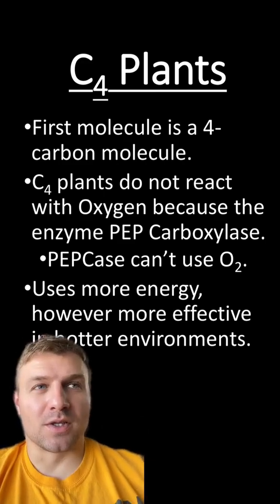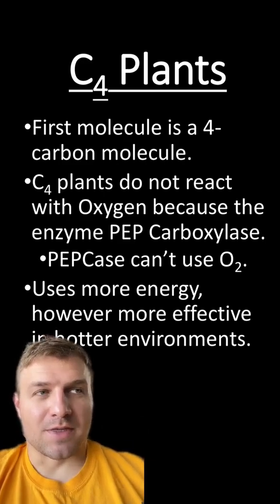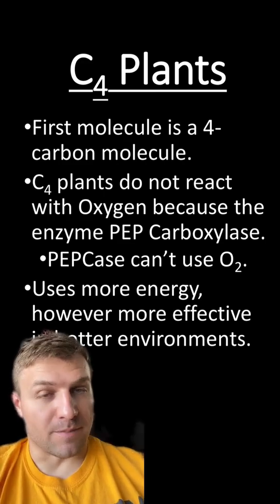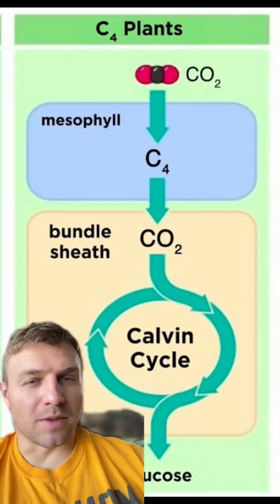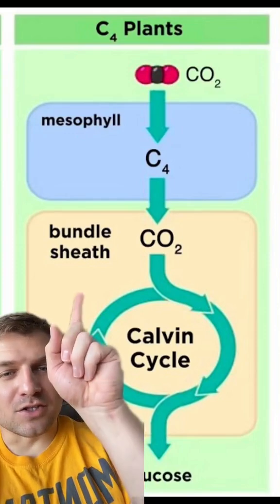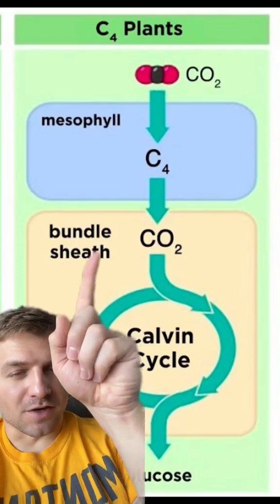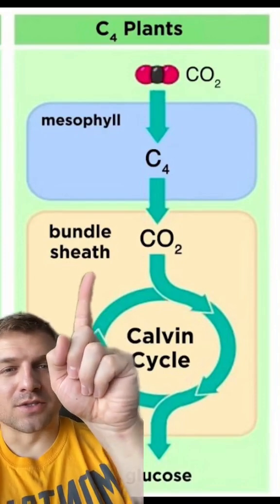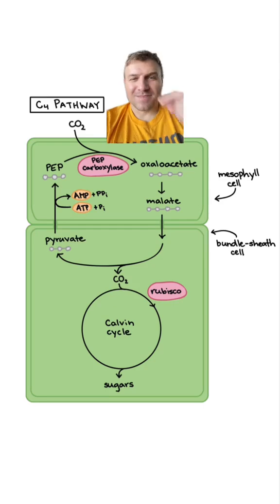C4 plants will use more energy to go through photosynthesis, but that's better than going through photorespiration, which is very bad. In C4 plants, there's going to be a four-carbon molecule produced first, and then that four-carbon molecule is going to produce CO2, which then goes into the Calvin cycle.